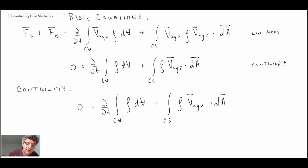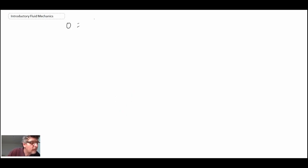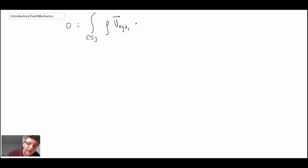We have steady flow, so the time-derivative term is gone. What we're left with is an integral across the two control surfaces — control surface 1 and control surface 2. We apply the continuity equation across those two control surfaces and expand it. I'm going to write the velocity vector with x, y, z components with respect to the control volume reference frame, with subscript 1 for control surface 1 and for control surface 2.